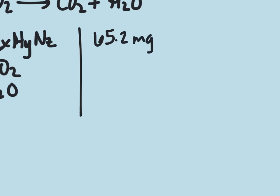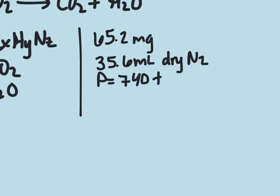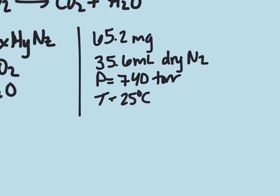We're also told that a 65.2 mg sample is analyzed for nitrogen using the Dumas method, and it gives us 35.6 mL of dry N2 at a pressure of 740 torr and a temperature of 25 degrees Celsius.